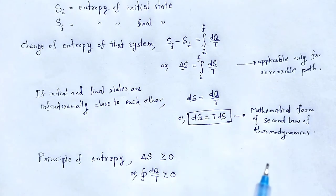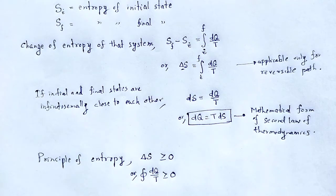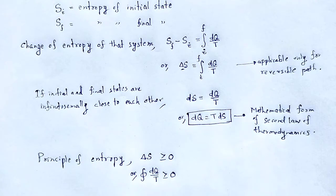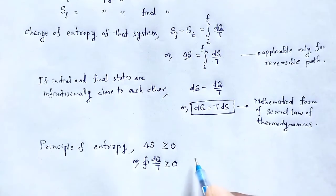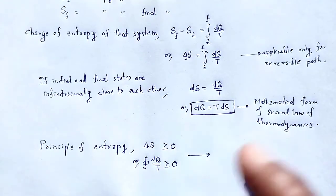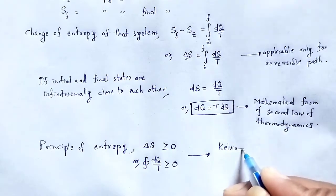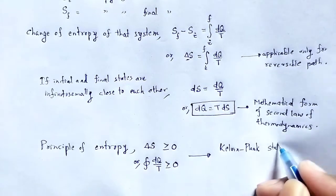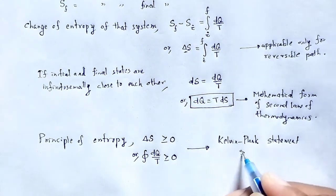This embodies both the Kelvin-Planck and Clausius statements of the second law of thermodynamics. Previously, we discussed the Kelvin-Planck and Clausius statements and their equivalence. By using these two statements, we can define the second law of thermodynamics in terms of entropy.